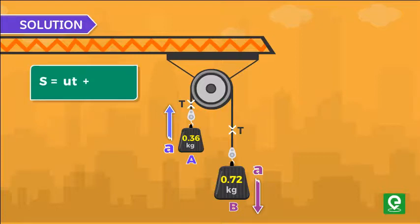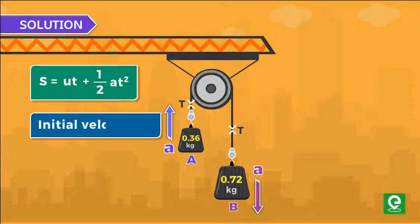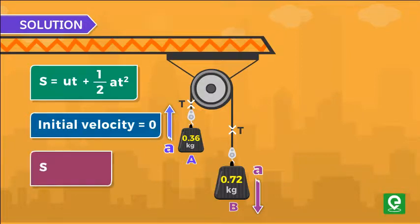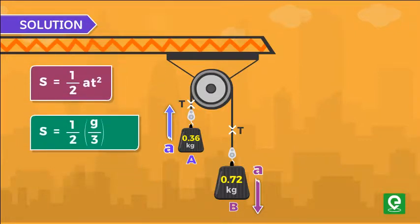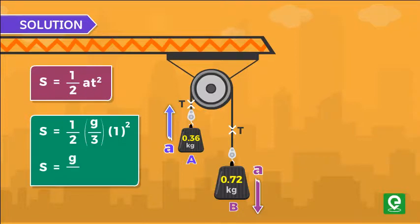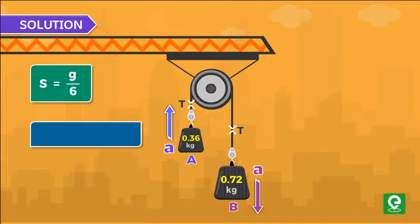Now we can find the displacement of block by using the second equation of motion, which is s equal to ut plus half at squared. Since the system is released from rest, initial velocity u is zero. Hence our equation becomes s equal to half at squared. On putting the value of acceleration and time, we get net displacement s equal to g by 6.